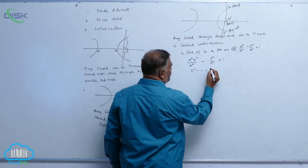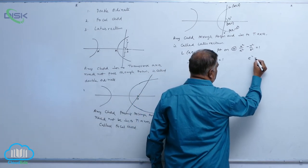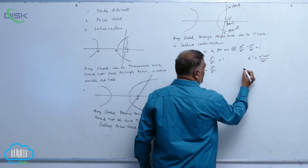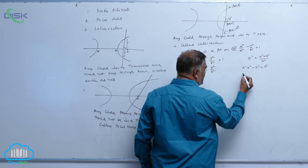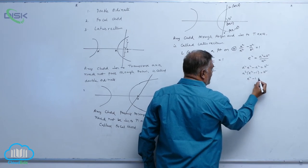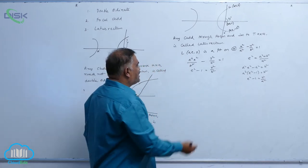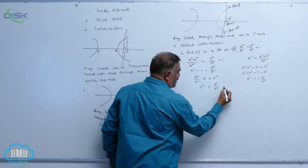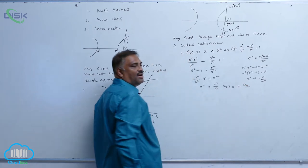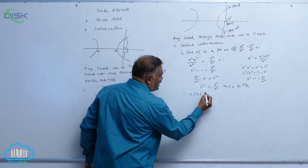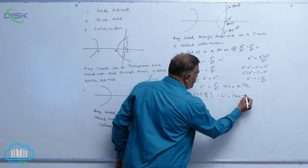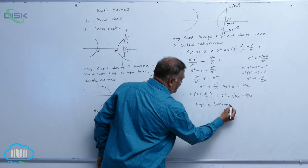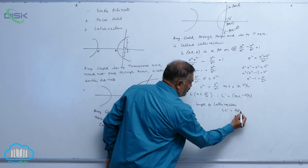So e² − 1 = y²/b². We know that e² = (a² + b²)/a², which gives a²(e² − 1) = b², so e² − 1 = b²/a². Substituting: y² = (b²/a²)·b² = b⁴/a², which implies y = ±b²/a. Therefore L = (ae, b²/a) and L dash = (ae, −b²/a). The length of the latus rectum LL dash = 2b²/a units.